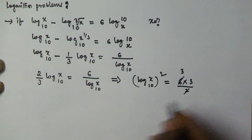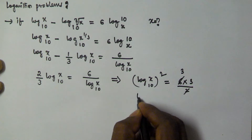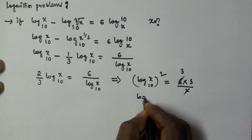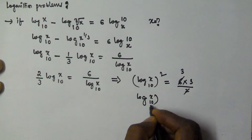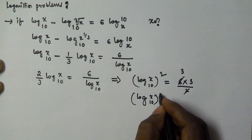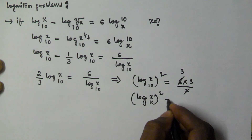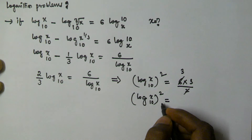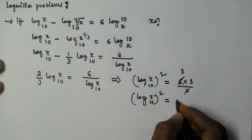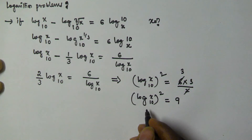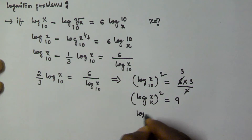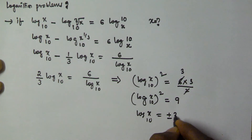Cross-multiplying, we get log x base 10 times log x base 10 is equal to 9. That means log x base 10 is equal to plus or minus 3.